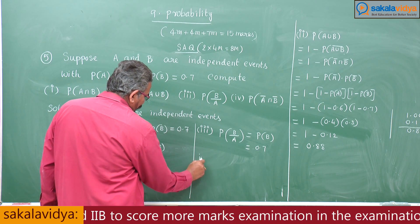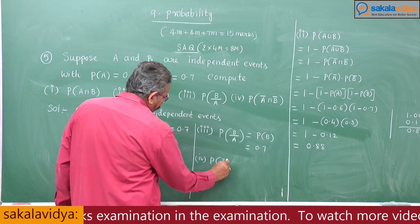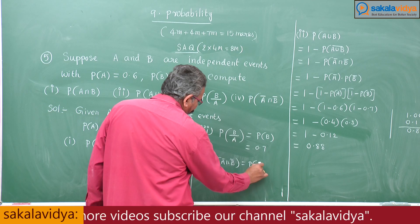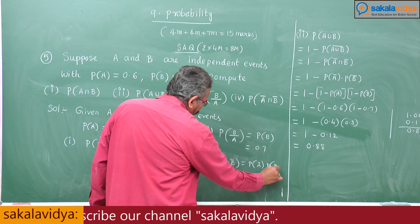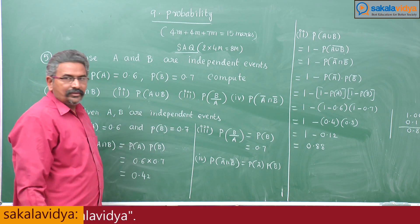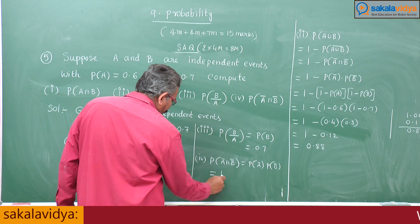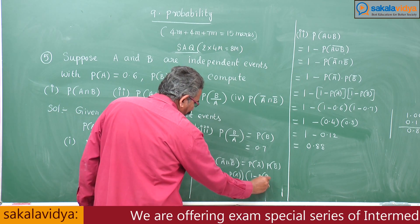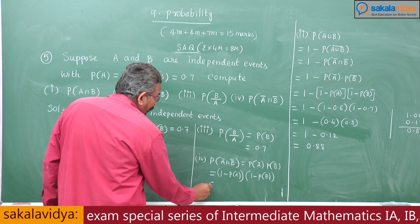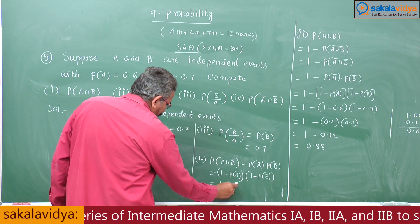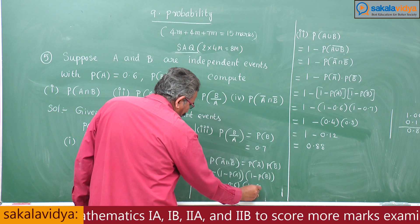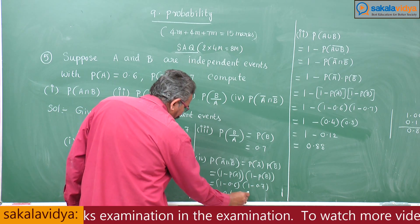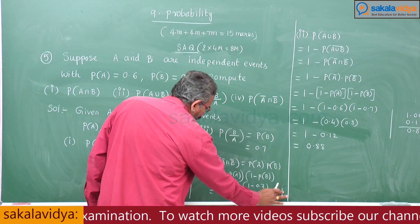Fourth one: P(A bar intersection B bar). This is nothing but P(A bar) into P(B bar), as we just calculated. So P(A bar) is 1 minus P(A), and P(B bar) is 1 minus P(B), giving (1 minus 0.6) into (1 minus 0.7), which is 0.4 into 0.3 = 0.12.